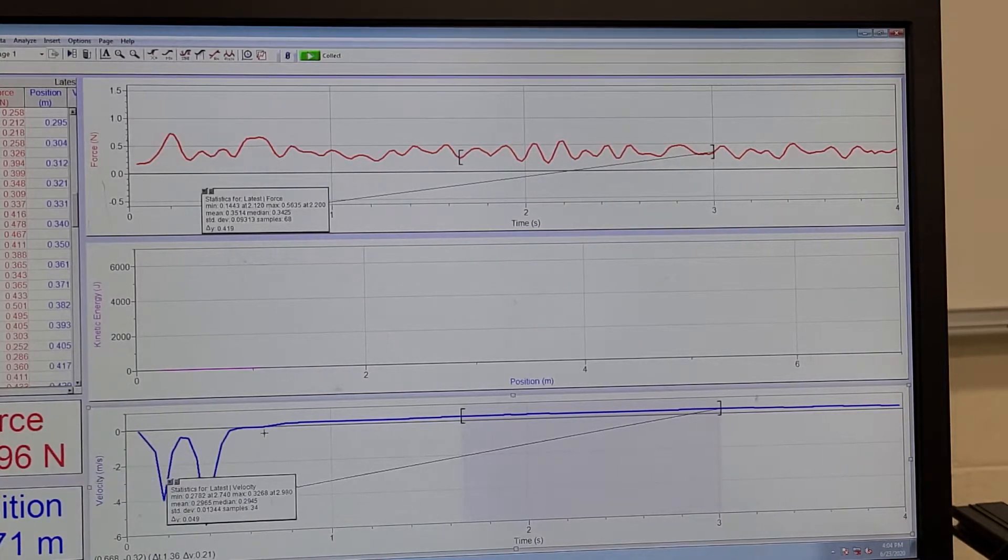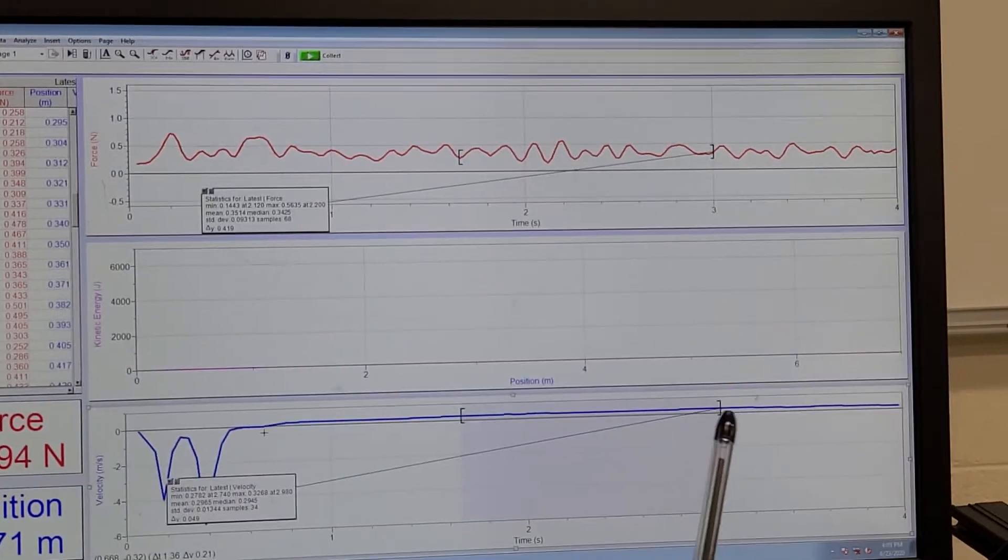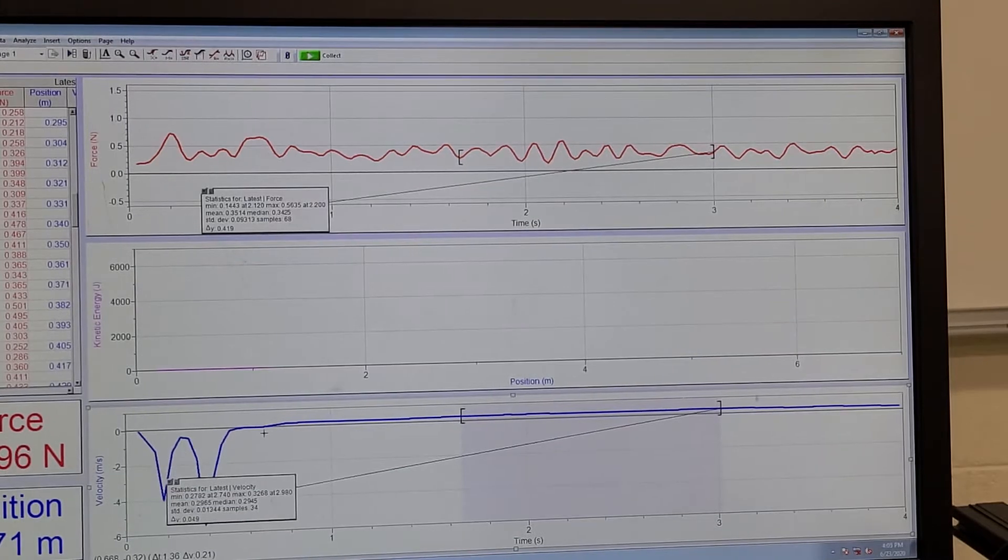There's some spikes here just because the motion detector I think picked up my hand as I started moving the block. The square brackets show where I have averaged the data.